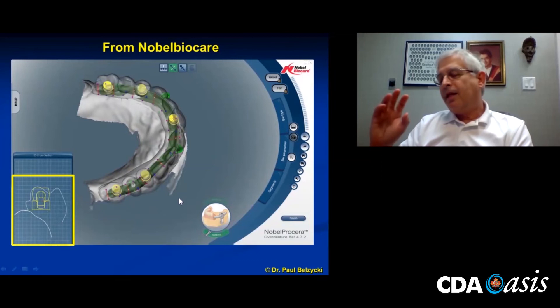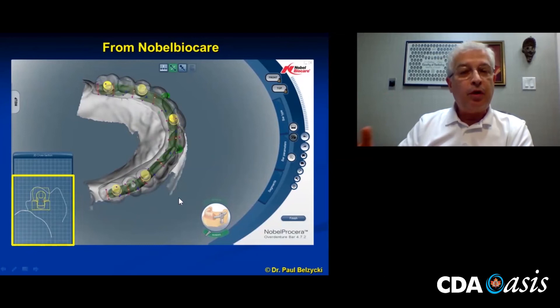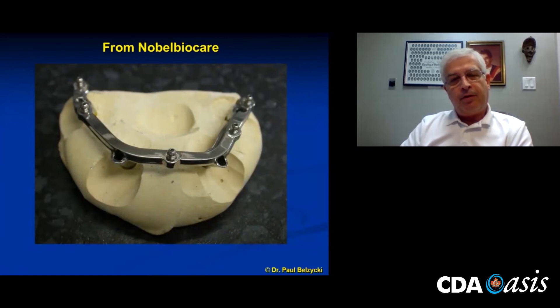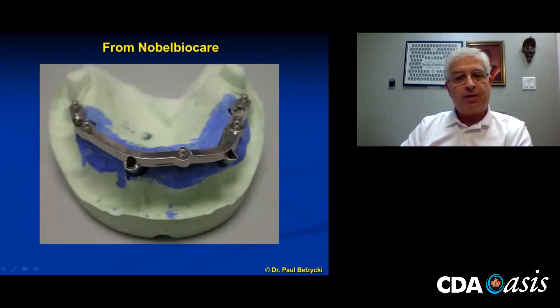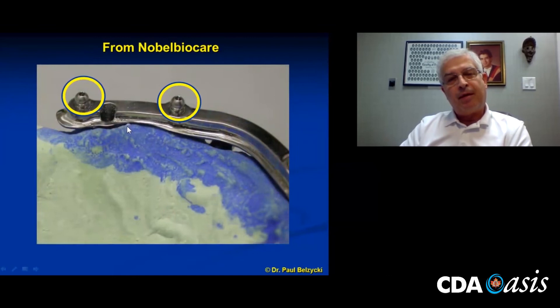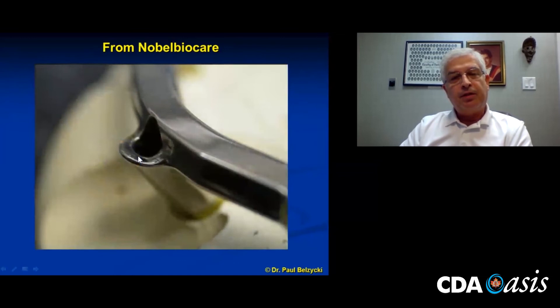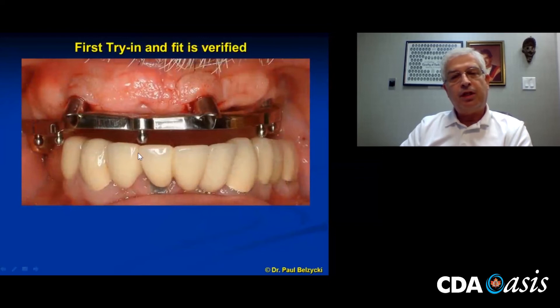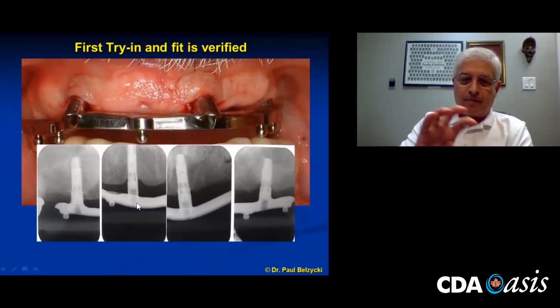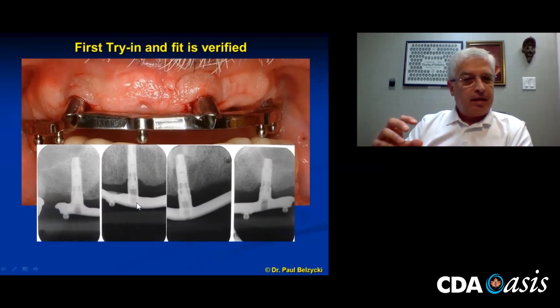We got this back from Nobel BioCare — the model that resulted from the verification jig. It went back on the master model quite nicely. I looked at this and thought, this is what they designed. These areas look a little off — and there are the overdenture snaps. I thought, this looks like it's sticking out into space. How is that going to impact the position of those teeth? The day of trying it in, it just fit absolutely beautifully. This was my first extensive wraparound prosthesis milled by CAD/CAM, and I was blown away that the arch just fit spot on.